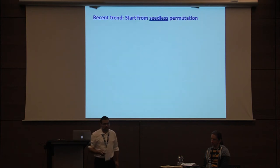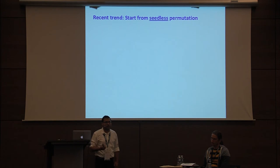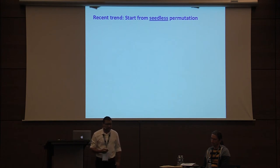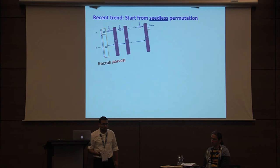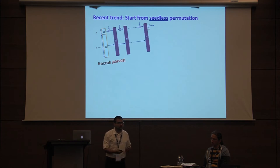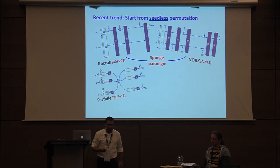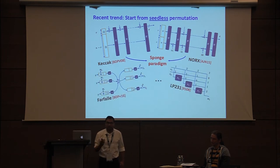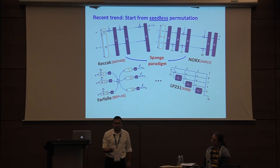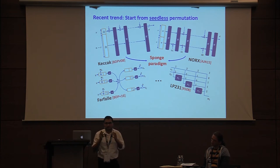The recent trend has been to use a seedless permutation as the basic building block. To cite a few examples, there are constructions of hash functions like Keccak, a variant of which is the SHA3 standard, of authenticated encryption schemes, of PRFs, of compression functions that use this permutation pi as the core primitive.